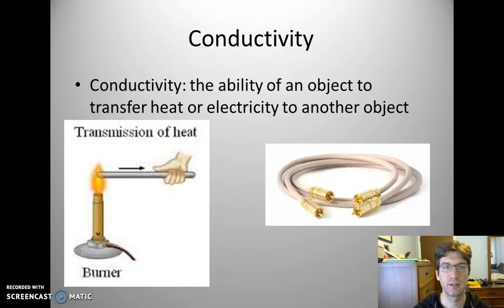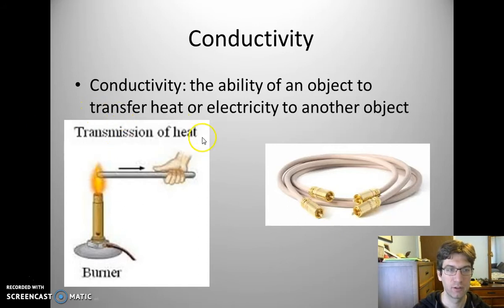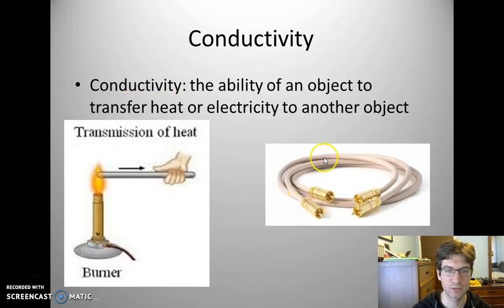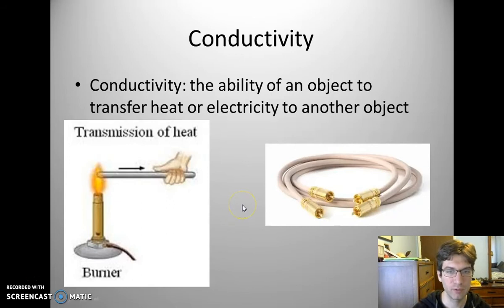Next is conductivity — the ability to transfer heat or electricity. If you hold a pot over a stove, eventually the handle gets hot because heat is transferring through the metal pot into your hand. That would be heat conductivity. We also have electrical conductivity, such as through wires like coaxial cables in your televisions or computers — the ability to transfer electricity through the metal.